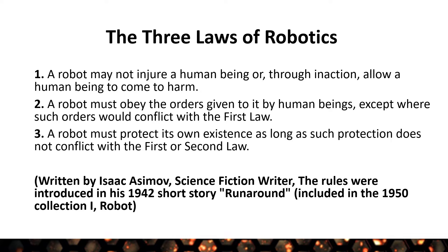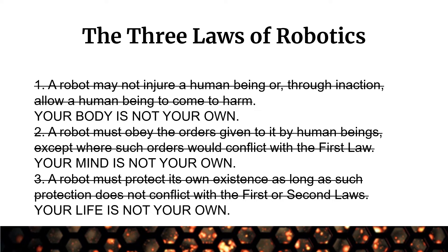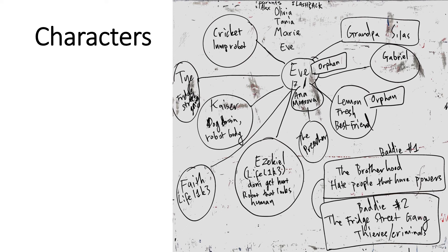The third law: a robot must protect its own existence as long as such protection does not conflict with the first or second law. So the robot will look after itself, but most importantly it will look after humans and obey orders. In this book, these three laws have slight changes — 'your body is not your own, your mind is not your own, and your life is not your own' are the additions to these three famous laws.